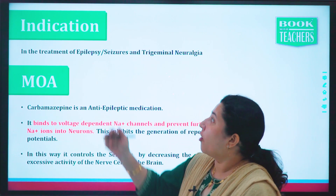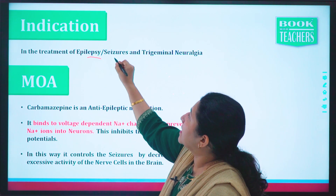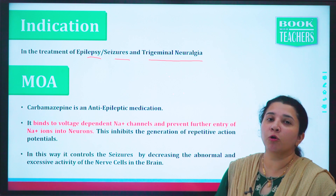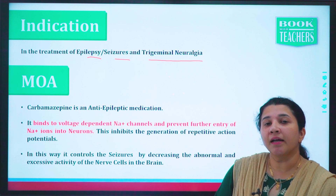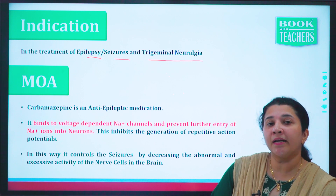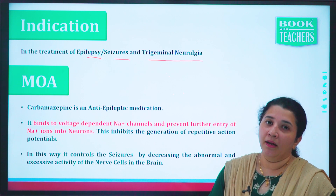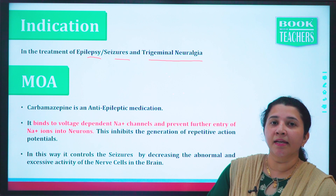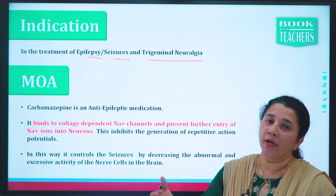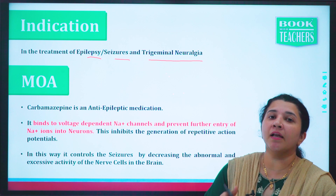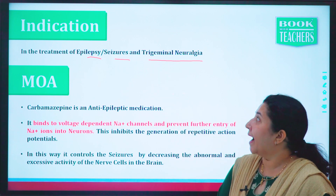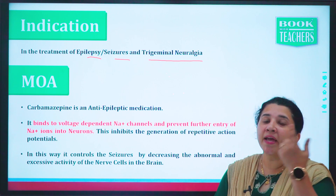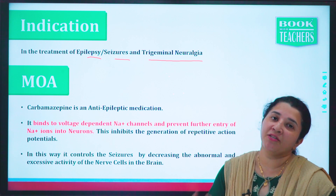Carbamazepine is used in the treatment of epilepsy, seizures, and trigeminal neuralgia. Epilepsy is also called seizures — seizures are uncontrolled electrical disturbances in the brain. The neurons are responsible for transferring signals from different parts of the body, so disturbance in this electrical impulse causes seizures. Trigeminal neuralgia is nothing but facial nerve pain — pain in the facial nerves.